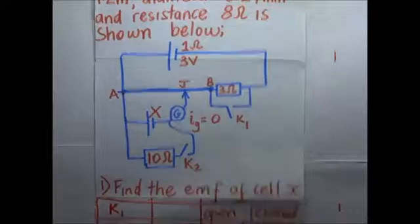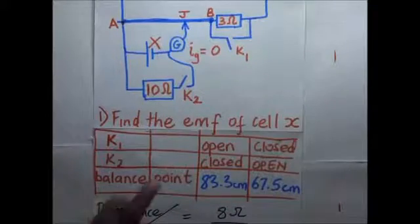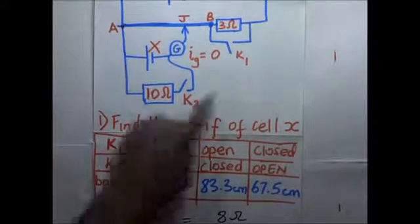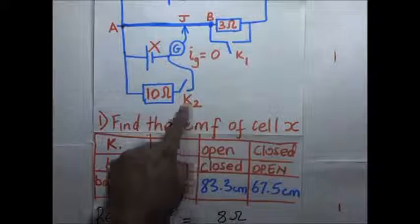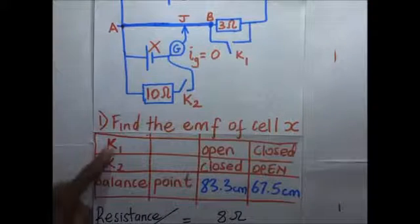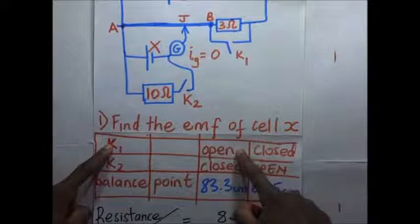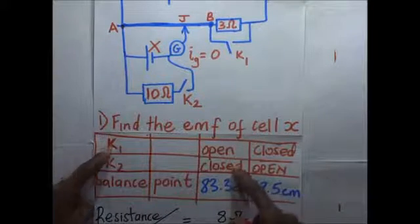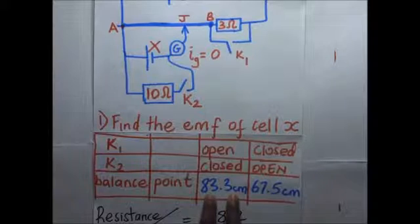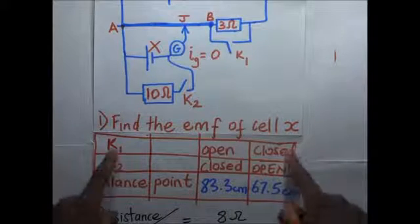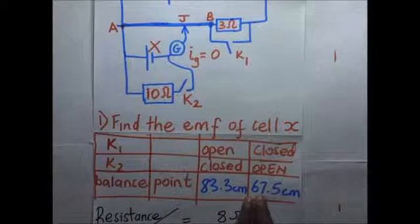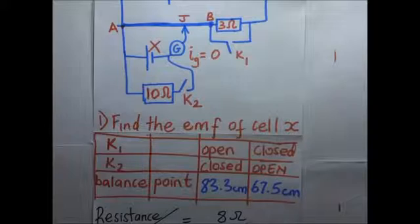These are some of the conditions given in the question. We have two switches in this potentiometer circuit: k1 and k2. When k1 is open and k2 is closed, the balance point is 83.3 centimeters. When k1 is closed and k2 is open, the balance point is 67.5 centimeters.